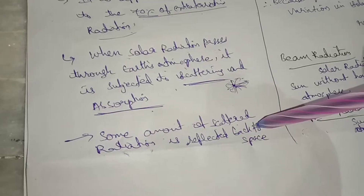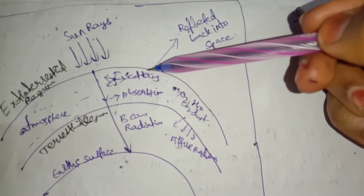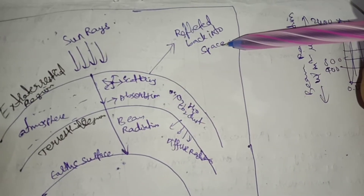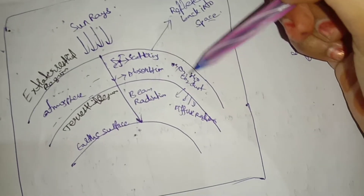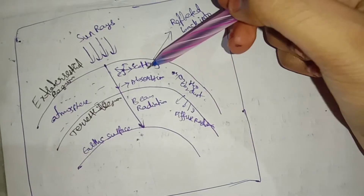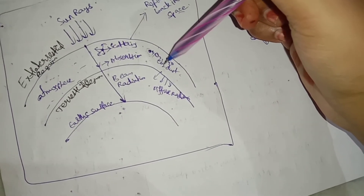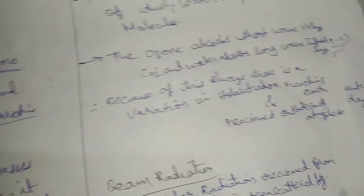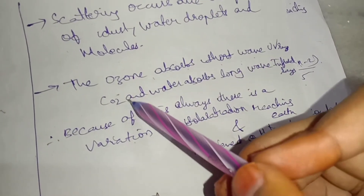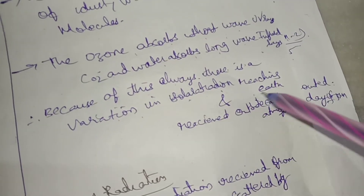Some amount of scattered radiation is reflected back to space. Scattering is caused by water droplets and dust particles. Ozone absorbs short-wave UV rays, whereas carbon dioxide and water absorb long-wave infrared rays. Because of these effects, there is always a variation in solar radiation reaching the earth compared to what is received outside the earth's atmosphere.